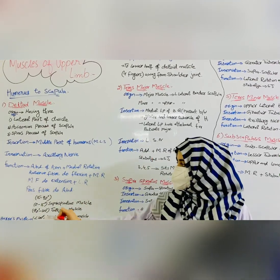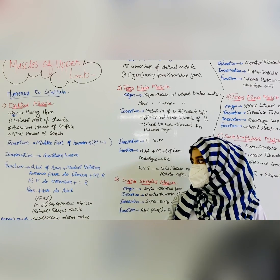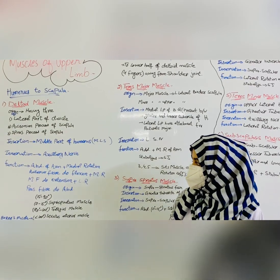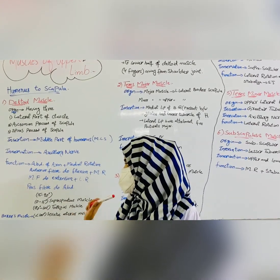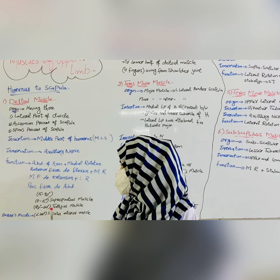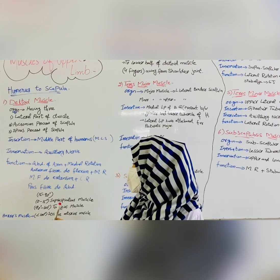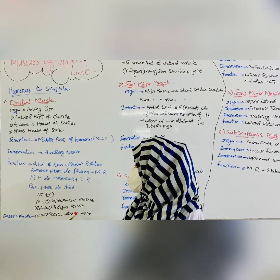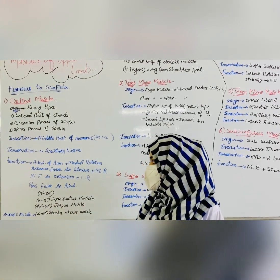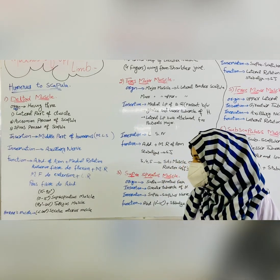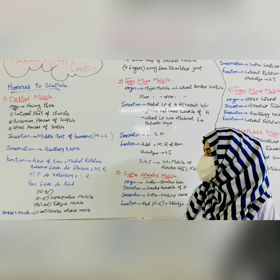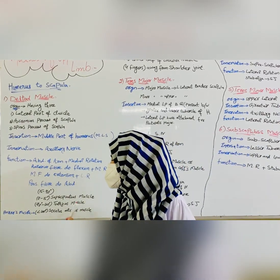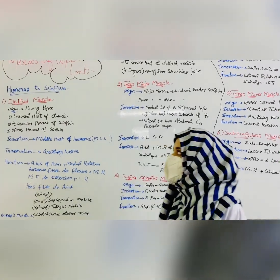From 15 to 90 degrees, abduction is performed by the deltoid. From 0 to 15 degrees, abduction is performed by the supraspinatus muscle, and from 90 to 100 degrees, abduction is performed by the trapezius muscle. More than 100 degrees of abduction is performed by the serratus anterior muscle, which is also known as the boxer's muscle.